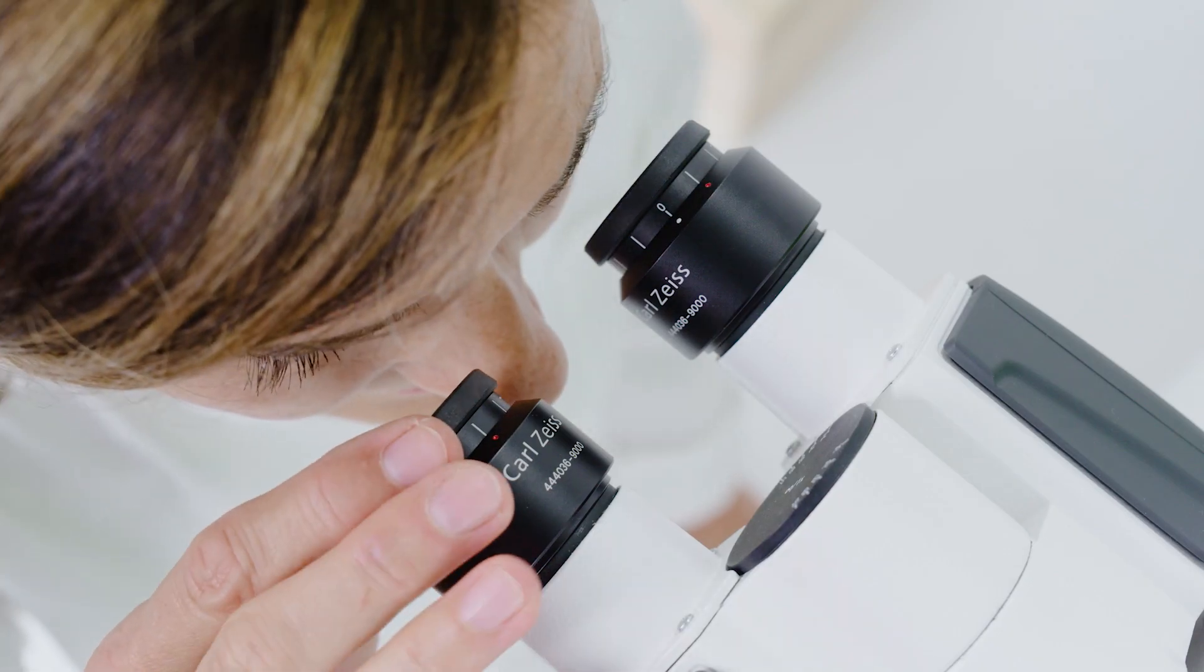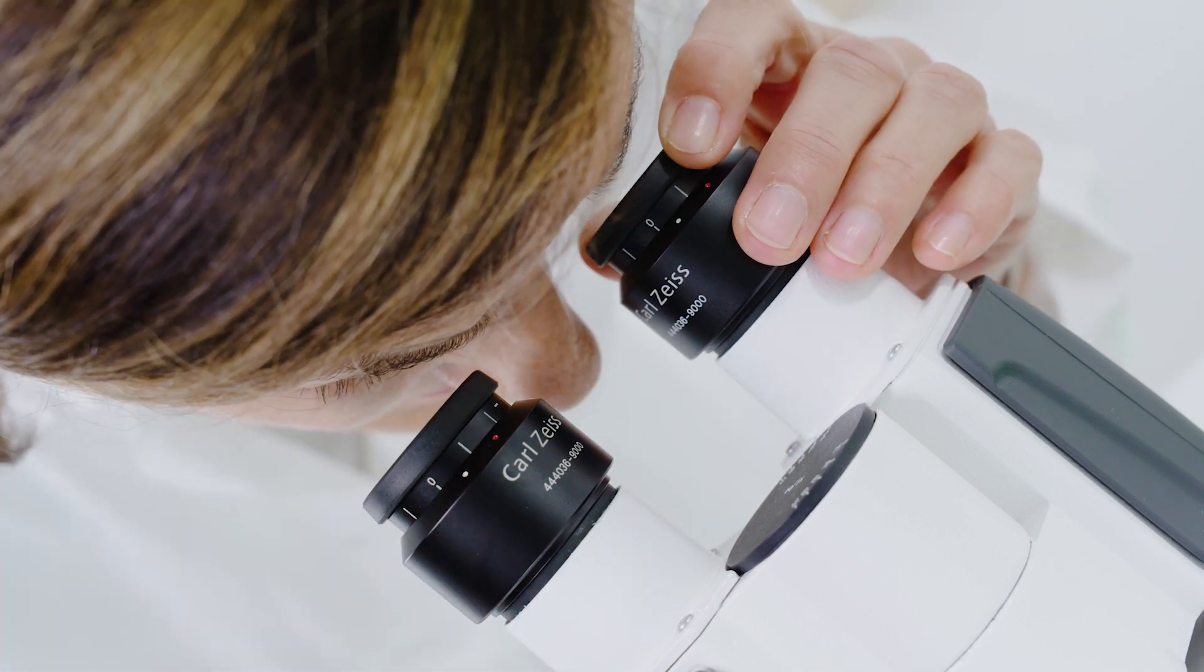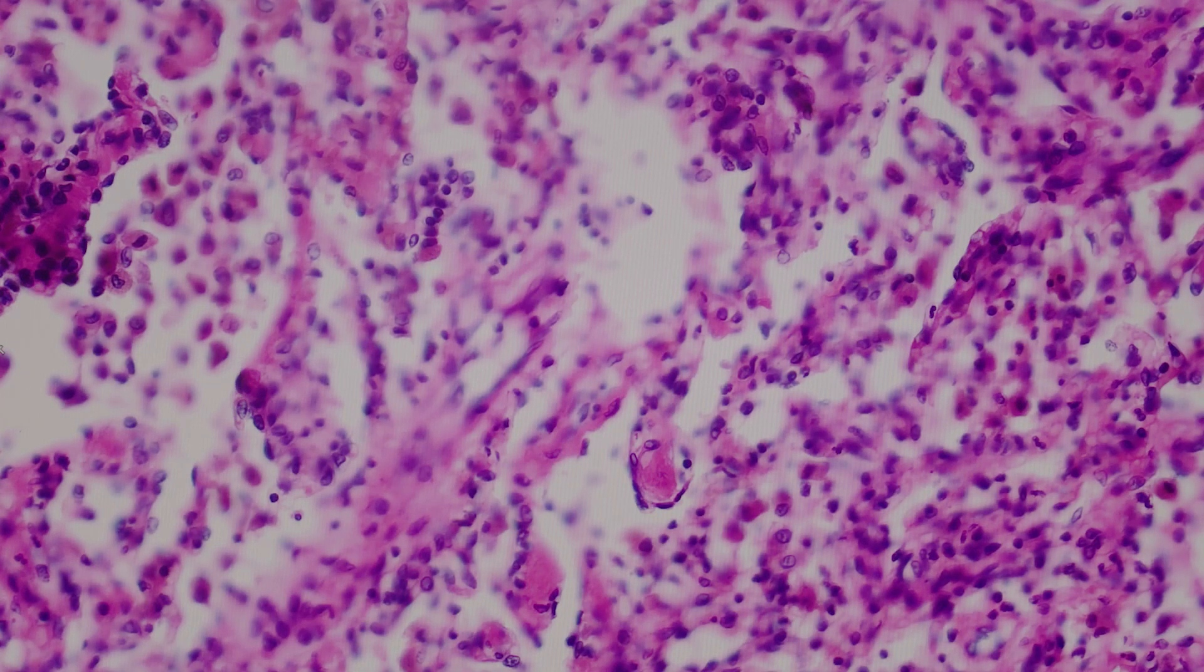Adjust the diopter correction for each eye for sharp vision. Start with a diopter setting of zero, then adjust the diopter correction for each eye individually and make sure the image appears perfectly focused.